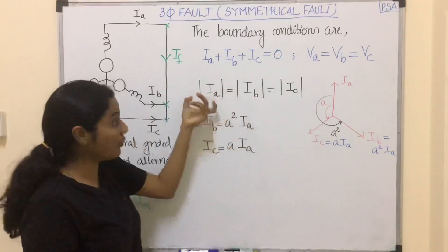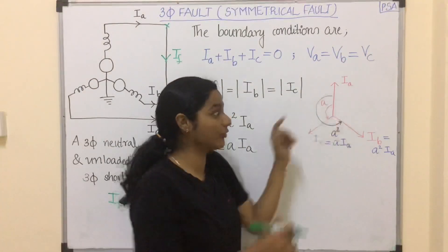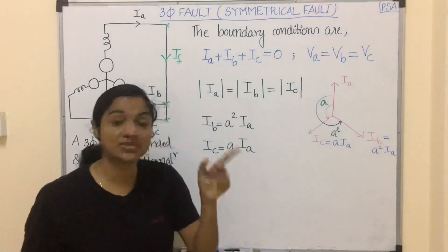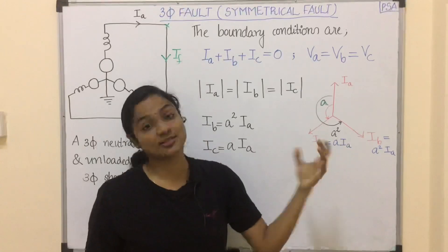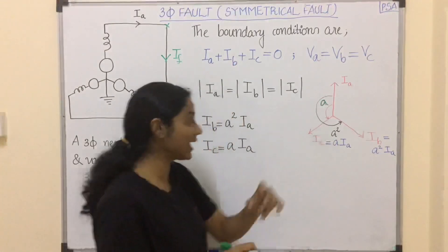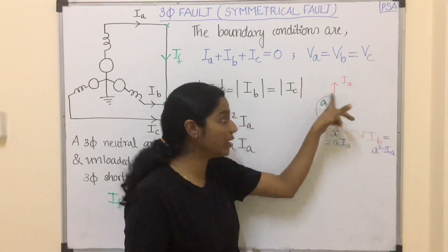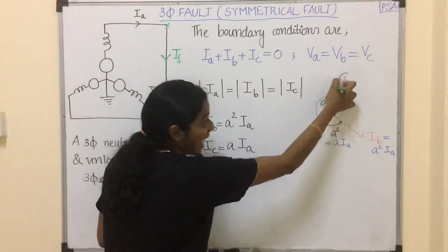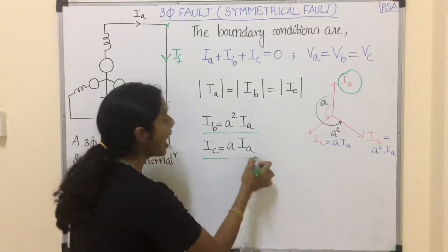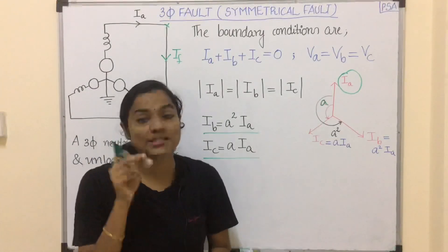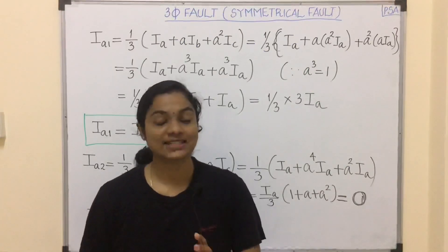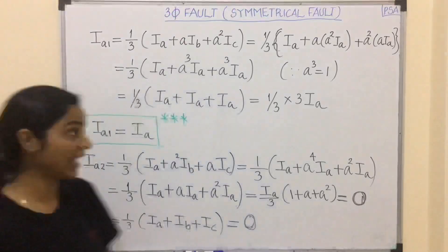We represent the phase currents using the complex vector operator a, where a means 1 angle 120 degrees and a squared means 1 angle 240 degrees — as discussed in detail in symmetrical component transformation. Taking Ia as the reference phase current, we have Ib = a² × Ia and Ic = a × Ia. Now let's look at the symmetrical component values of phasor current. First, define the positive sequence component Ia1.